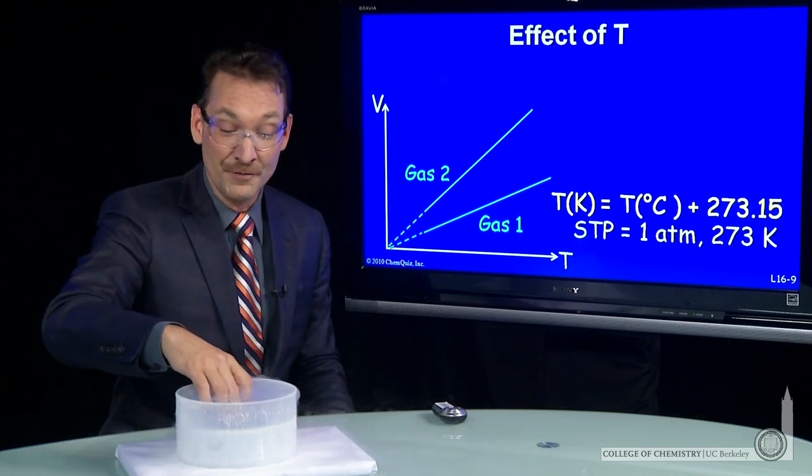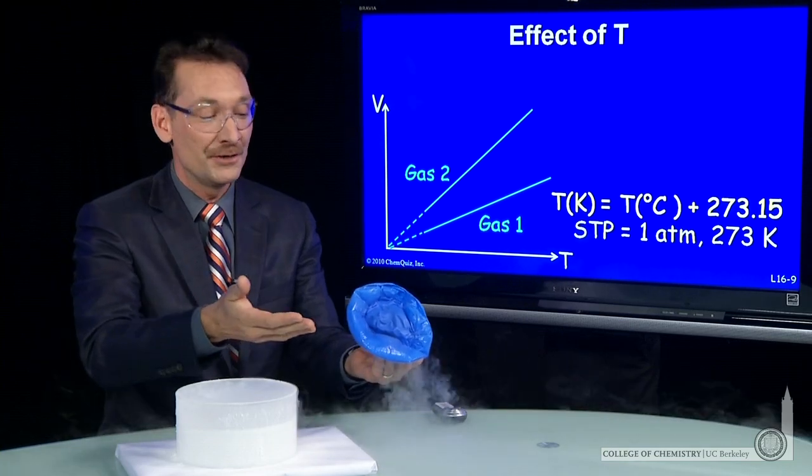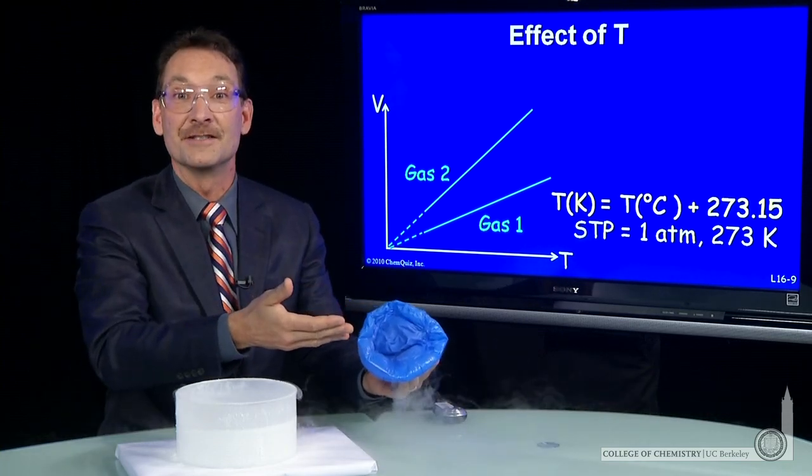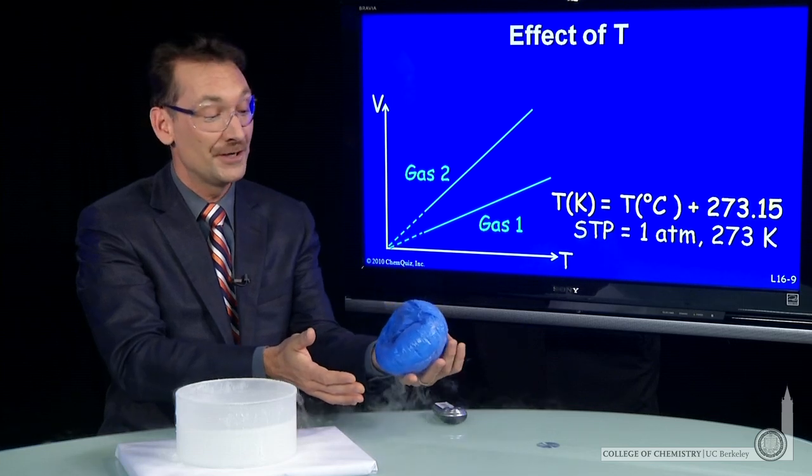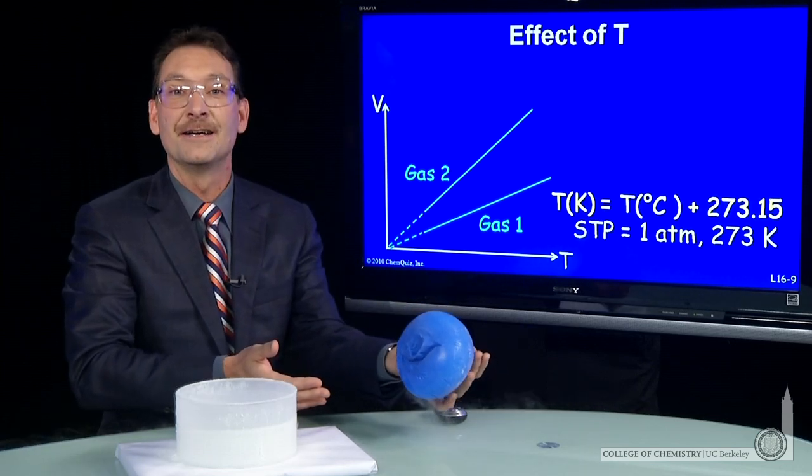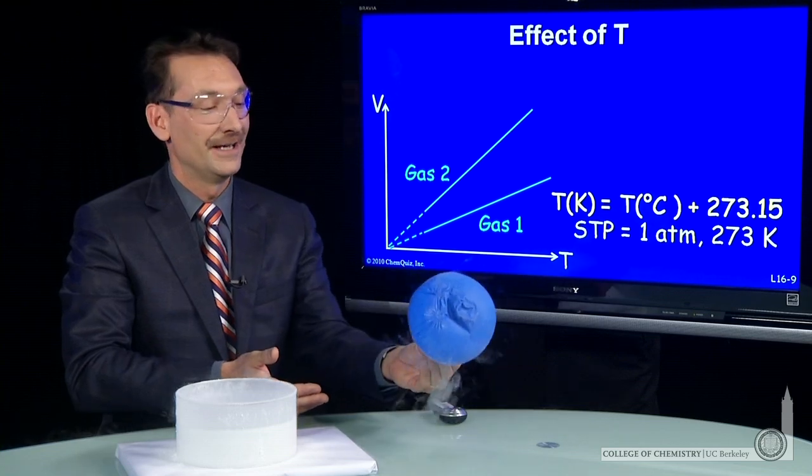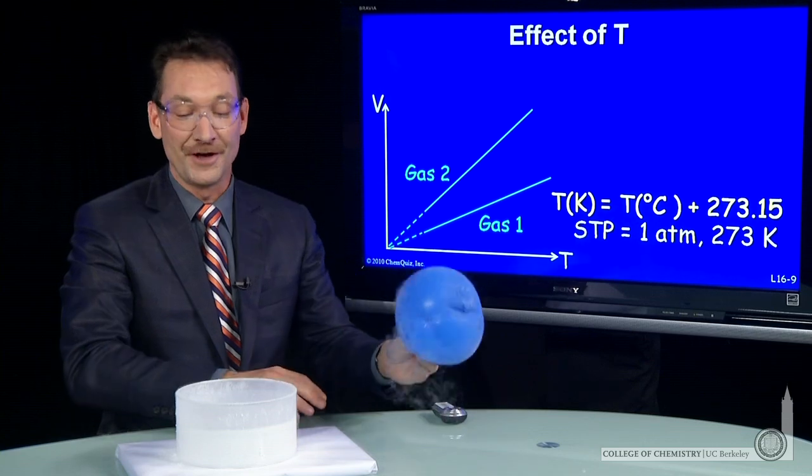Now let's remove the balloon from liquid nitrogen and let it expand. As the temperature increases, the volume of the gas increases. The volume of the gas increases linearly as the temperature increases. And you can see this volume comes back to near its original volume. Linear relationship between temperature and volume.